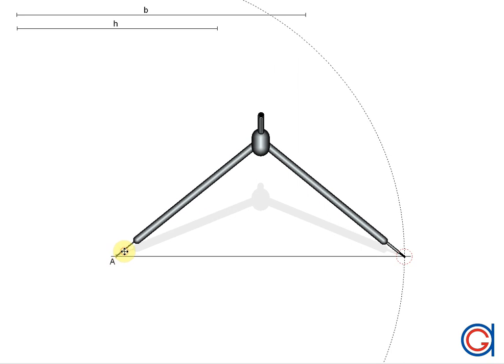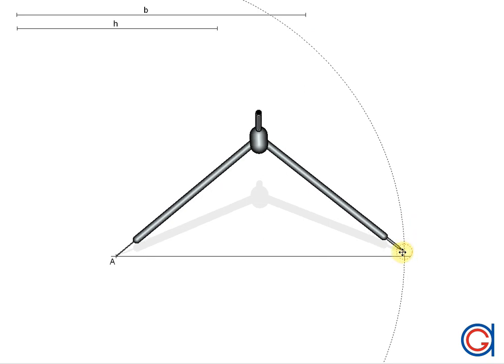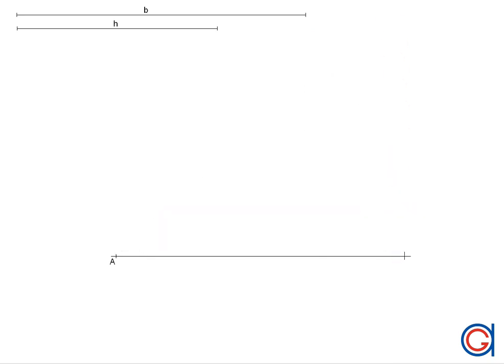Setting our compass on A and scribing an arc to get our second vertex, which we will call C.